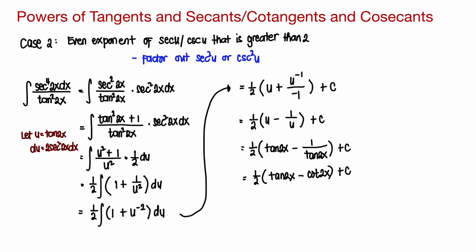If you want to express the answer differently, that's okay as long as it's correct. You can write this as tangent of 2x minus cotangent of 2x all over 2 plus c. Or you can write that as 1 half tangent of 2x minus 1 half cotangent of 2x plus c. All of these answers are the same.